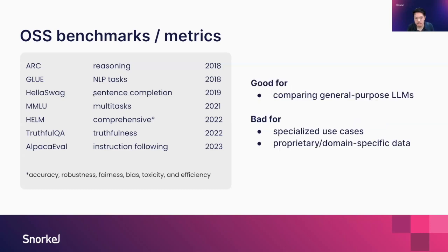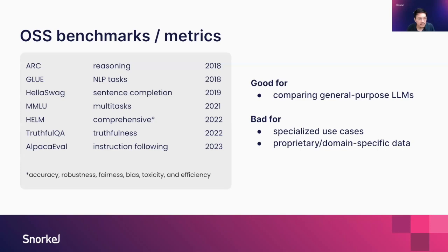These are really good for comparing general-purpose LLMs and larger foundation models, but oftentimes when we talk to our customers and users, they don't quite apply to specialized use cases. These general metrics around reasoning, NLP, sentence completion, or instruction following are helpful when building base models, but can be less relevant when you're trying to build a medical co-pilot or a financial services chatbot. They don't often operate over proprietary domain-specific data — they're built around generalist data sets — and so can fall down when you're trying to make them work for your own specific use cases.